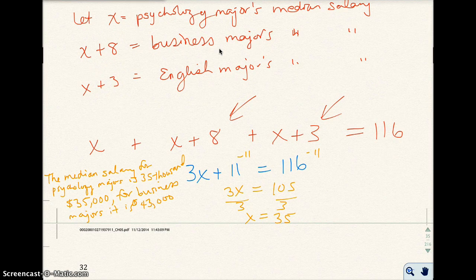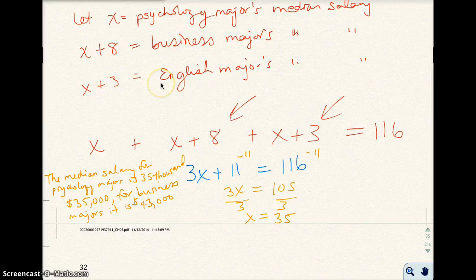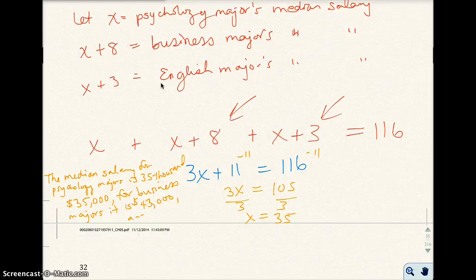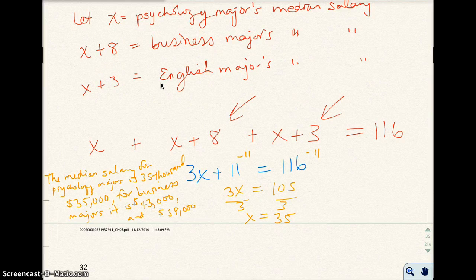And for English majors, we're going to take 35 plus 3. So I get 38,000 for English majors.